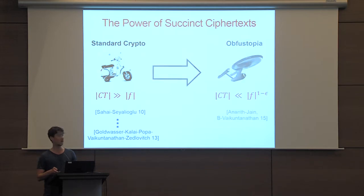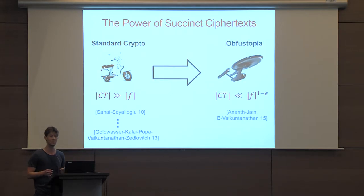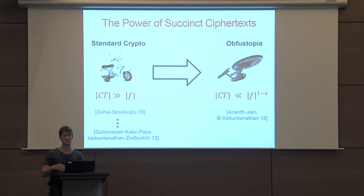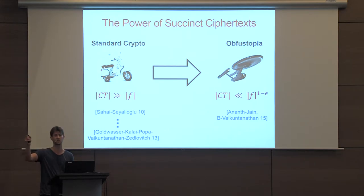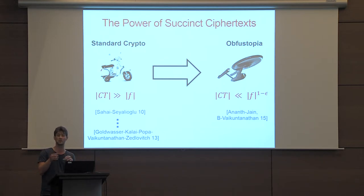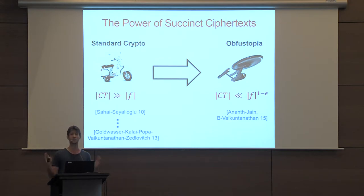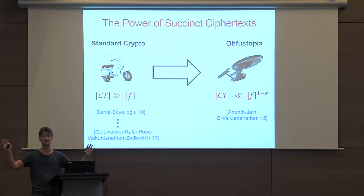In contrast, if we allow the ciphertext to be even mildly succinct — meaning sublinearly in the circuit size — then there is a tremendous jump in the power of functional encryption, and we already get the immense power of obfuscation.